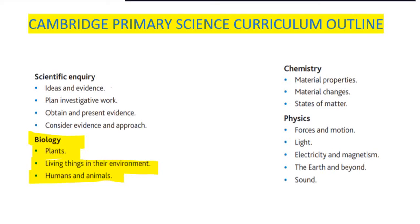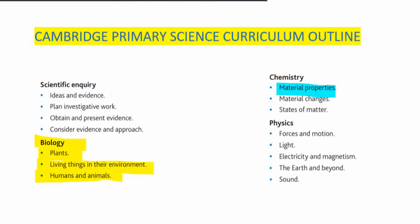Hi guys! Today we are going to discuss Cambridge Primary Science Checkpoint Revision. It is based on the curriculum. Today we are going to do chemistry. There are three subtopics: material properties, material changes, and states of matter. We start from number one, material properties, followed by material changes, and then states of matter. In this video we are going to complete the chemistry topic for Cambridge Primary Science Checkpoint. Let's get started.